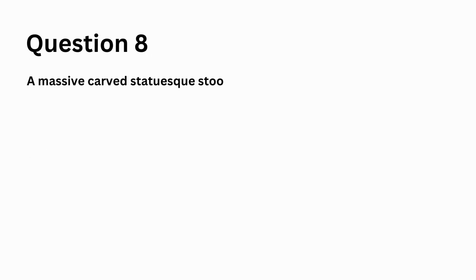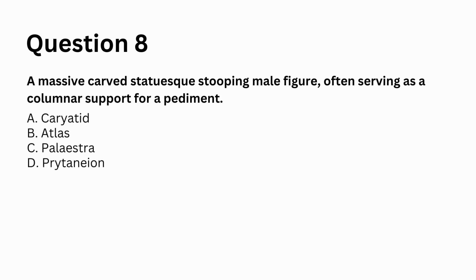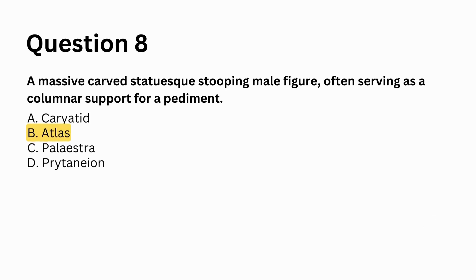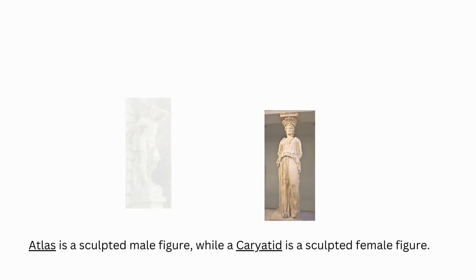Massive carved statuesque stooping male figure, often serving as a columnar support for a pediment: a. Caryatid, b. Atlas, c. Pylestra, d. Prytonian. Answer: b. Atlas. Atlas is a sculpted male figure, while Caryatid is a sculpted female figure, both serving as an architectural support taking the place of a column or pillar supporting an entablature on their head.